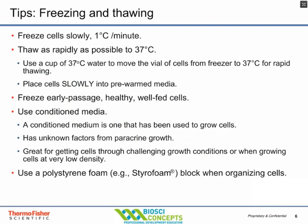In terms of freezing and thawing, a lot of people freeze correctly but don't thaw correctly. The recommendation is to always freeze cells at one degree per minute — freeze slowly. The idea is that we're allowing cells time before they're frozen to push water out of the cells in conjunction with the adjuvant in the freezing media, lowering the freezing point and giving cells more time to push water out.